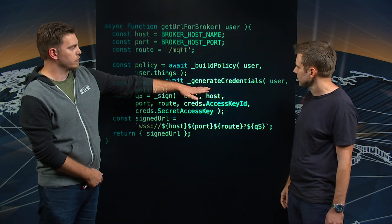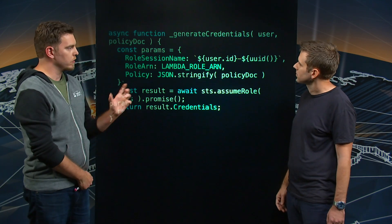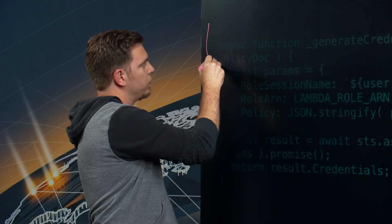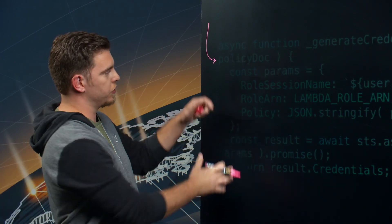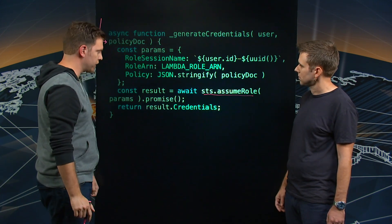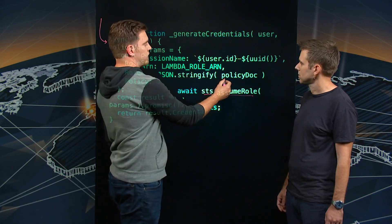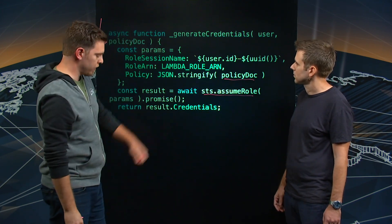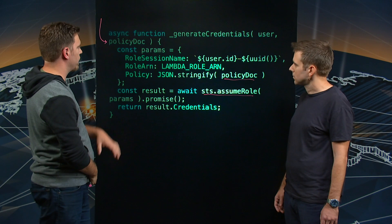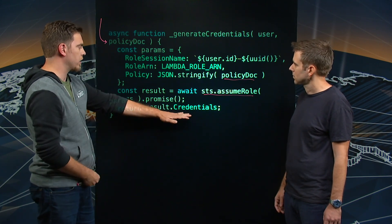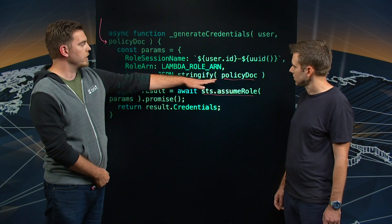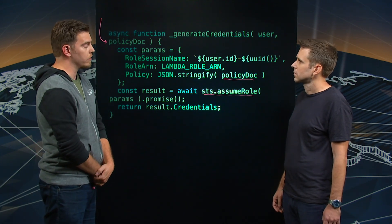Let's take a closer look at that generate credentials function, because that's kind of the linchpin of the logic here. If you notice, we're passing in the policy document into this function. But really, all this is doing is wrapping a call to STS assume role. This call allows us to generate a set of AWS credentials against this specific policy document. We're stringifying it here to escape all of the quotes and other syntax inside the IAM document, and then it's included as a parameter to that call. So the credentials that come back allow the owner of those credentials to do all of the things in that policy document, but only those things that are in the policy document.